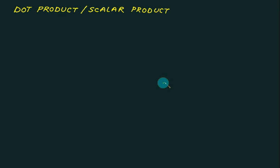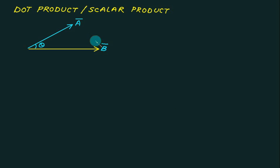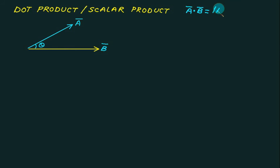Dot product or scalar product: consider two vectors a bar and b bar that make an angle of theta. The definition is: dot product of a bar and b bar equals mod of a into mod of b into cos theta.